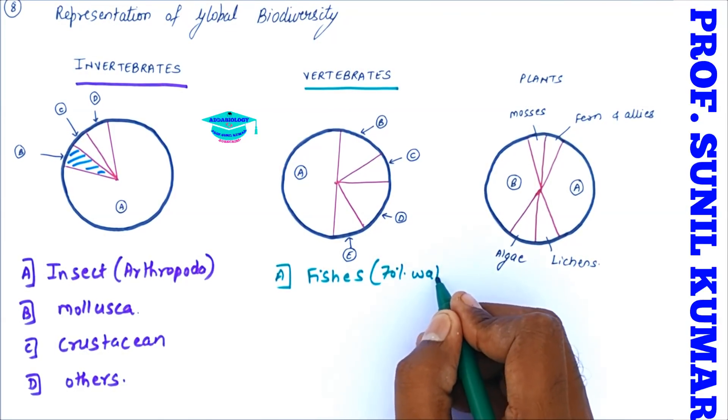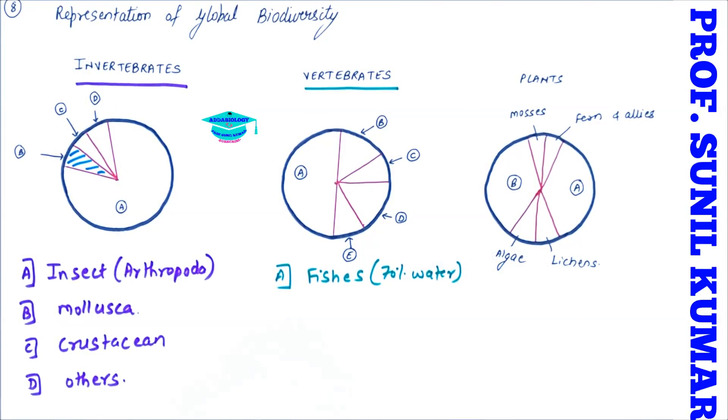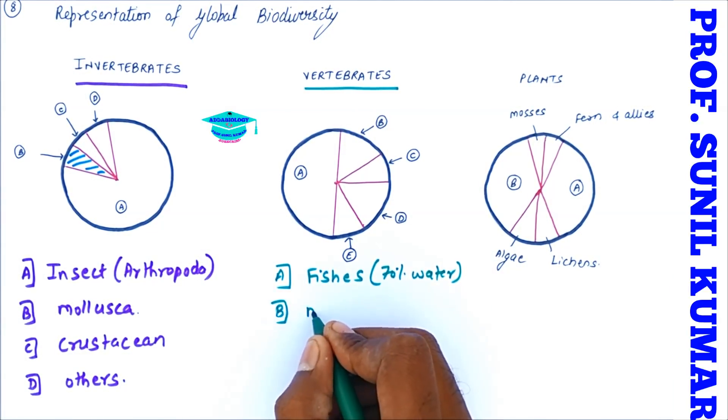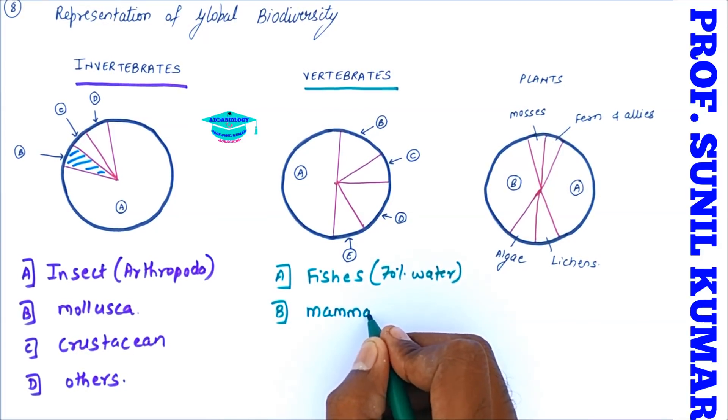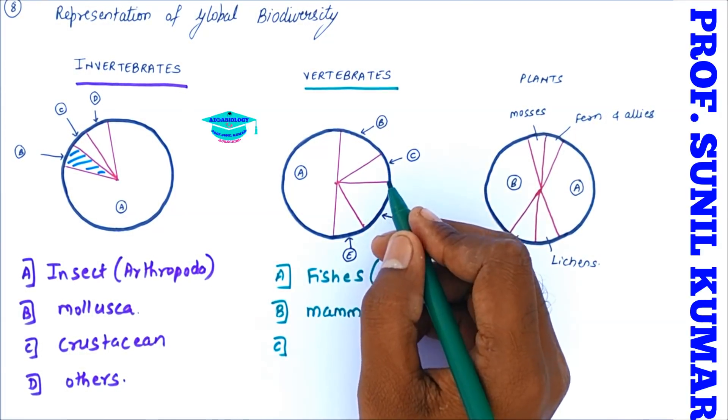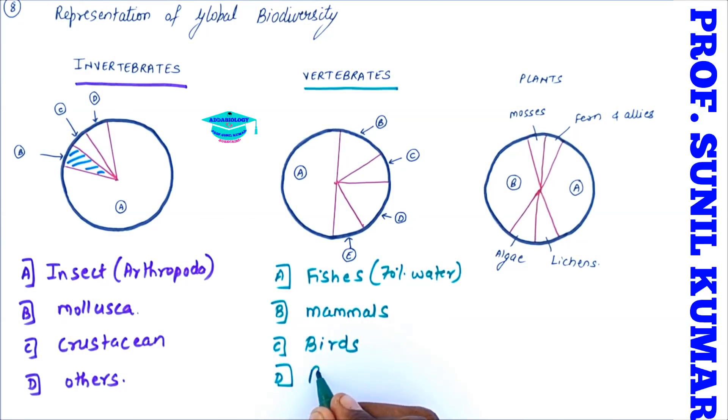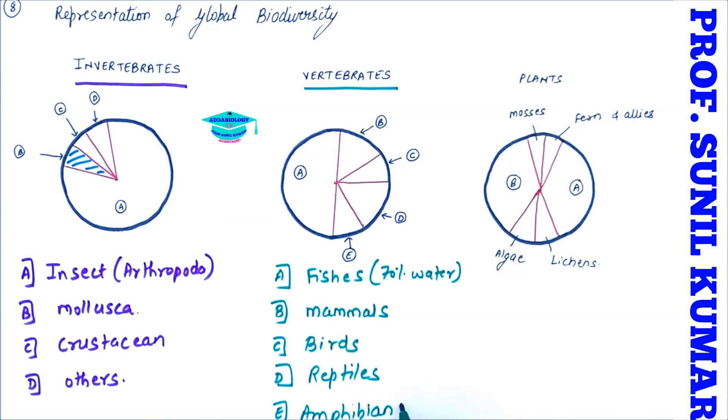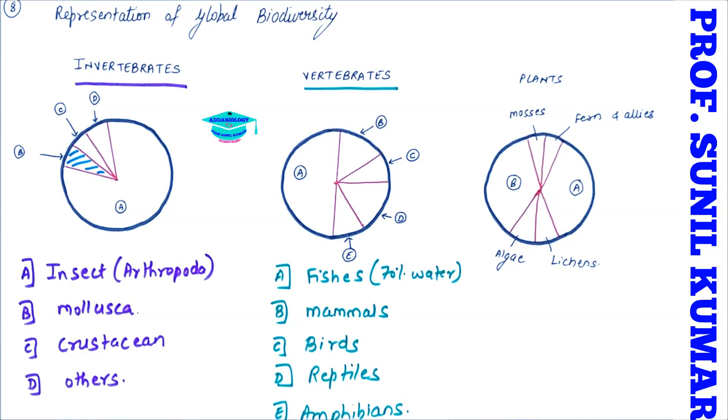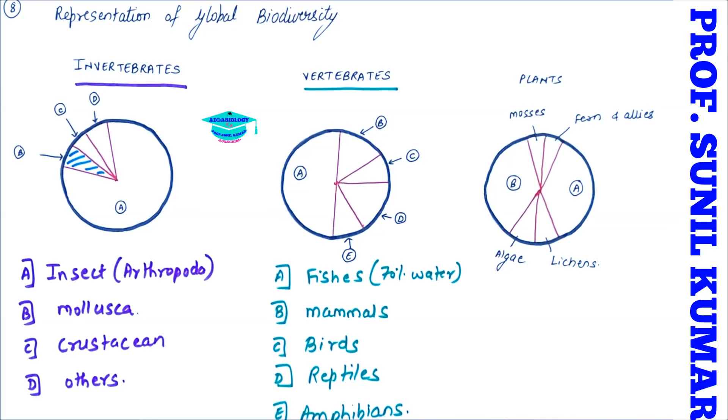Look at the second circle where half circle is fully occupied by one particular species. It means our earth is having 70 percent water, so majority of the animals will be living in water. So A is the major one, it talks about all the fishes. Second we have mammals, third we have birds, fourth we have reptiles, and the last is the amphibians. Amphibians are least in numbers. So it is fishes, mammals, birds, reptiles, and amphibians.